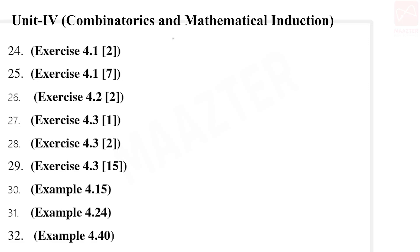Next, Unit 4. Exercise 4.1: 2nd sum, 7th sum; and Exercise 4.2: 2nd sum; then Exercise 4.1: 2nd sum and 15th sum. Then examples: Example 4.15, 4.24, 4.40, 4.52, 4.55 and Example 4.60.